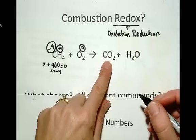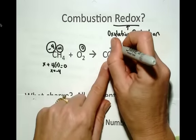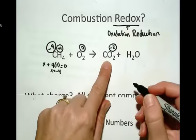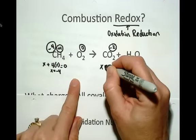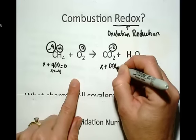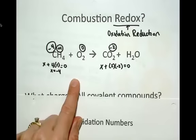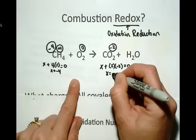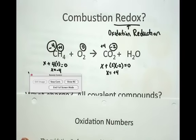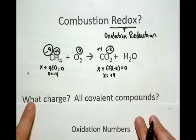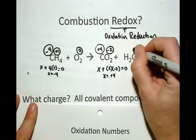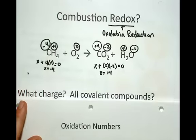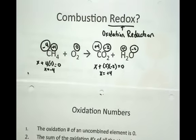Moving to the products: oxygen always has an oxidation number of minus two, so I label the oxygens in CO₂ as minus two. I don't know what carbon is, but I know I have two oxygens at minus two, and the whole molecule adds up to zero. So carbon in CO₂ is plus four. For water, oxygen is minus two, hydrogen is plus one — that gives plus two minus two, which equals zero.